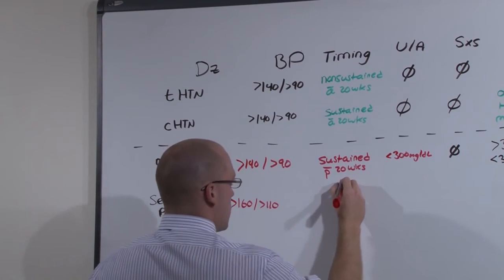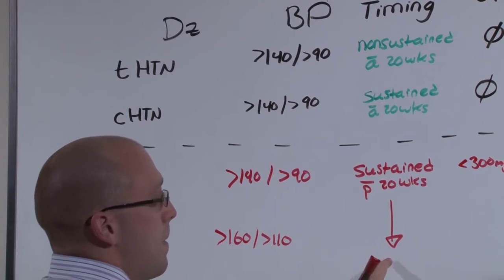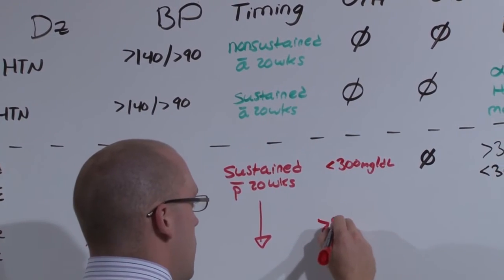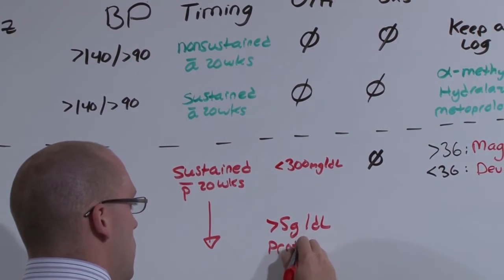It is going to also be sustained after 20 weeks, which is the definition of our obstetrics disease. But now, rather than simple microproteinuria, you're going to have greater than 5 grams per deciliter of protein. Full on nephrotic syndrome.